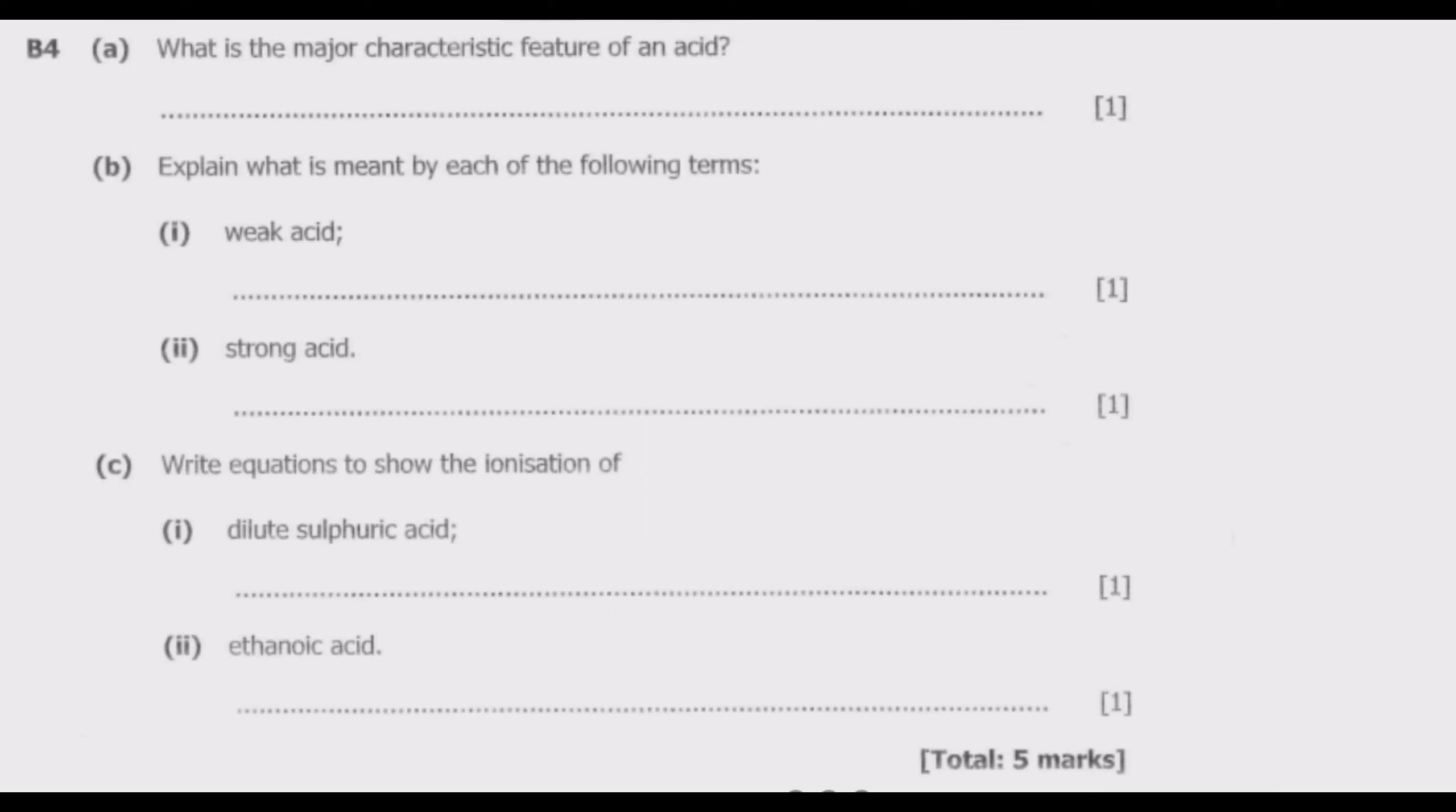Let us start with question B4A: What is the major characteristic feature of an acid? The key is the major characteristic feature, so what is the distinct distinguishing feature of an acid. Basically, when an acid is in the aqueous state, it ionizes to give hydrogen ions. Thus, in aqueous solution, an acid ionizes to give hydrogen ions.